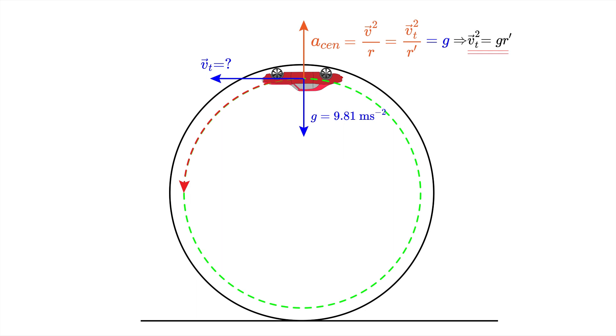From this we get our second equation for the minimal velocity of the car on the top of the loop that is needed in order to not fall down and to successfully complete the loop.